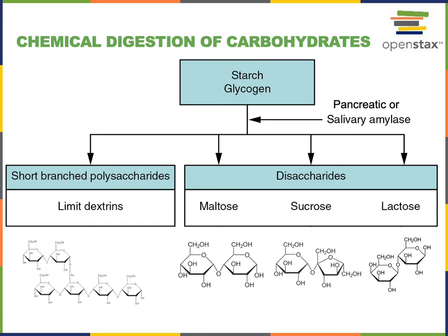Pancreatic juice contains pancreatic amylase that will complete the chemical digestion of starch and glycogen to produce maltose and limit dextrins. The other disaccharides shown in the image here, sucrose and lactose, come directly from the diet. Sucrose is table sugar, which is also found in some fruits, and lactose is milk sugar.